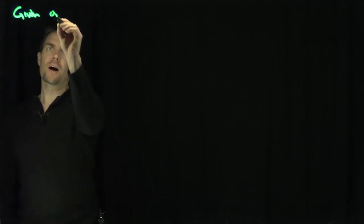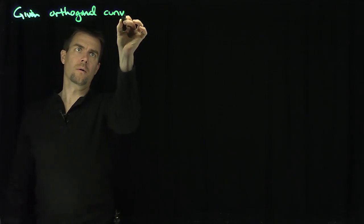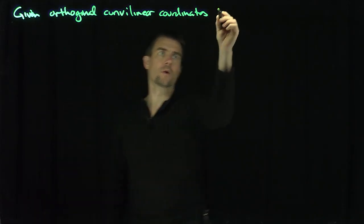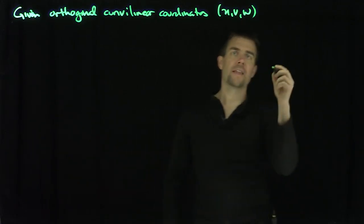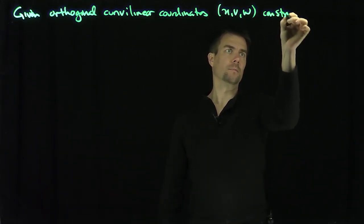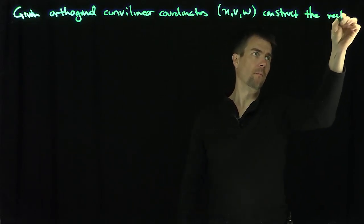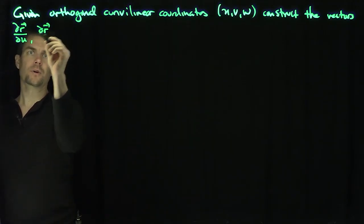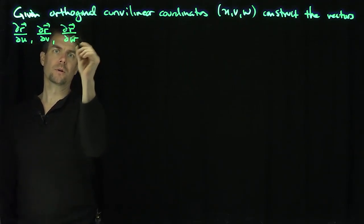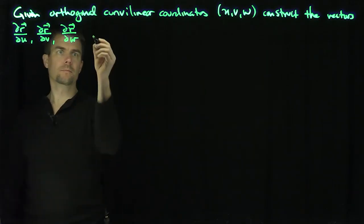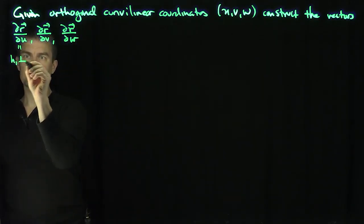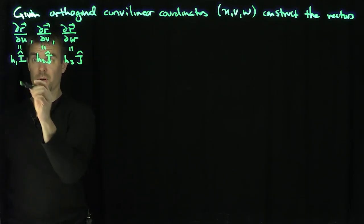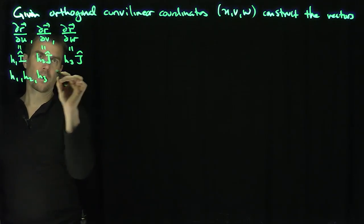Let's be given orthogonal curvilinear coordinates u, v, and w. We can construct the vector fields of position: partial r/partial u, partial r/partial v, and partial r/partial w. These vectors are all mutually perpendicular, and they're each scaled by numbers h1, h2, and h3, where those numbers are the Lamé coefficients.